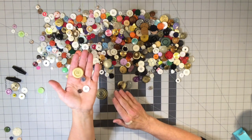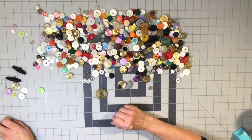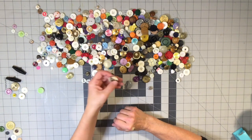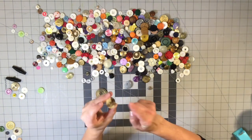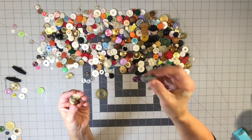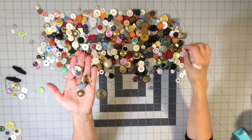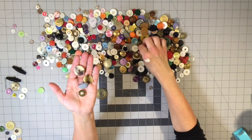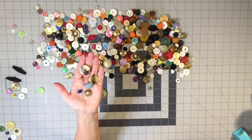And then you have the shank buttons. Shanks could look like this with a metal shank or a one-piece in with a button. These are different shanks and different size buttons. Here's a little tiny button that also has a shank on it.